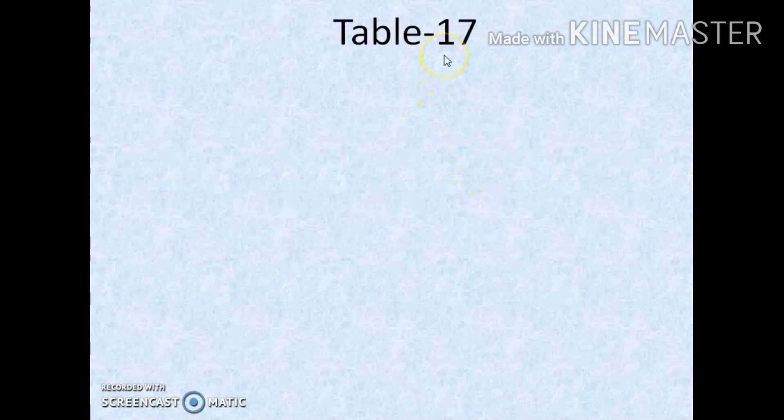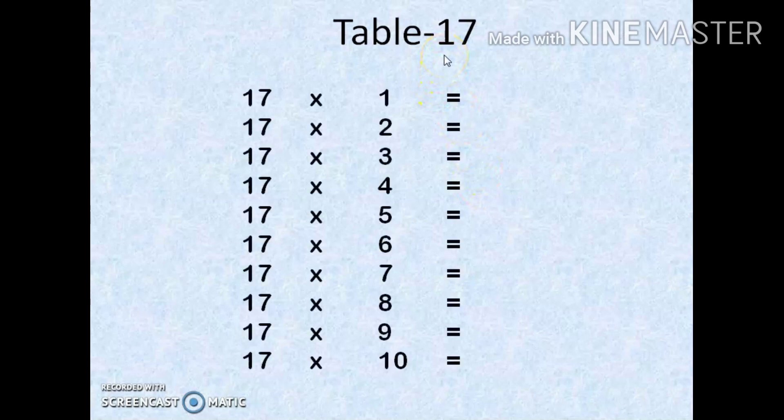Let me explain this trick using table 17. I have written the table for 17. First we have to write the table for the number in the tens place, that is for 1. I am going to write the table for 1: 1s are 1, 1 2s are 2, 1 3s are 3, 1 4s are 4, 1 5s are 5. Just like that up to 10 I have written.